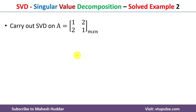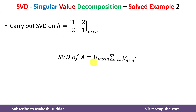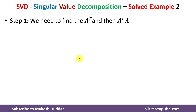We have been given a matrix A with two rows and two columns. We need to find the singular matrices U, Sigma, and V-transpose. Now we will discuss how to factor a given matrix into different singular matrices step by step.